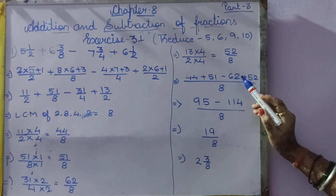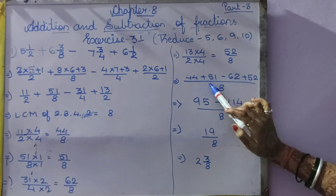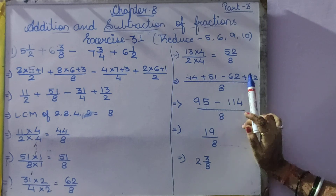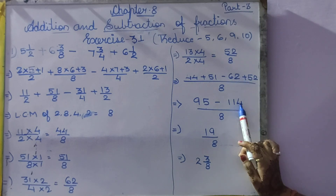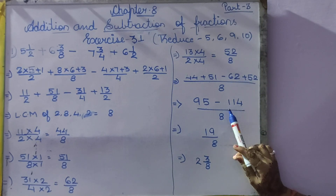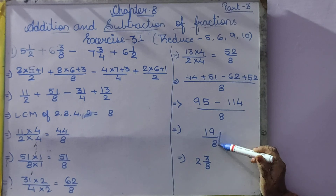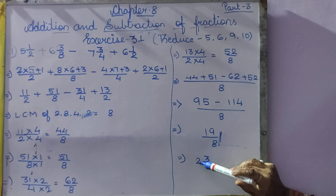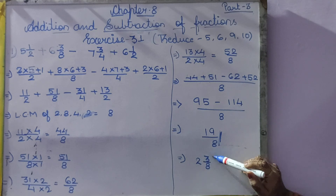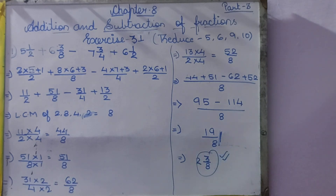When we have got the same denominator as 8, we add these two numbers to get 95, and we add the other two numbers to get 114. When we subtract these two results, we get 19 by 8. When we divide: 8 2's are 16, plus 3 will be 19. So the answer is 2 and 3 by 8.